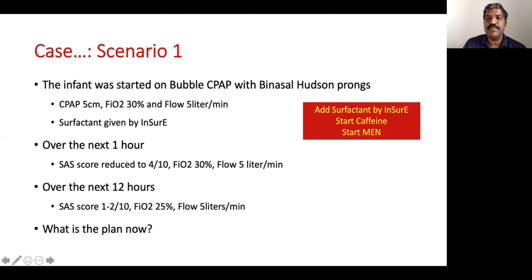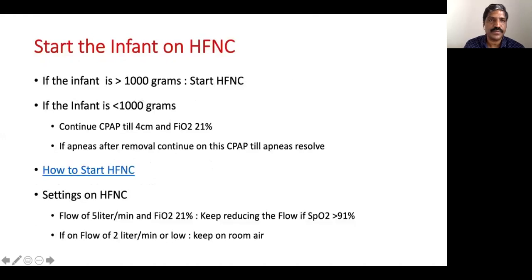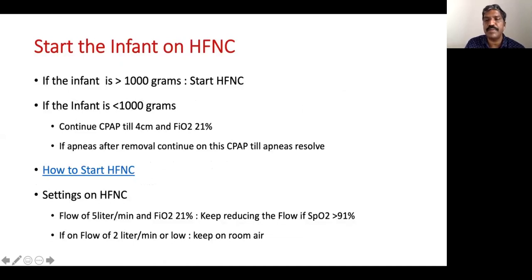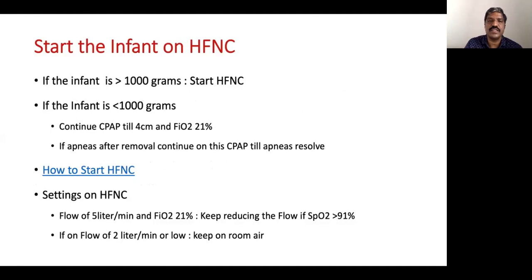Apart from surfactant and CPAP, this baby also requires caffeine and should be started on minimal enteral nutrition — adjunct therapies that help prevent infection and improve respiratory outcomes. Since the baby is over 1 kg, HFNC is started. For babies under 1 kg, CPAP continues until pressure reaches 4 cmH2O and FiO2 is 21%. If apneas occur, continue CPAP until they resolve — this may take a week or more in 700–800 gram babies.